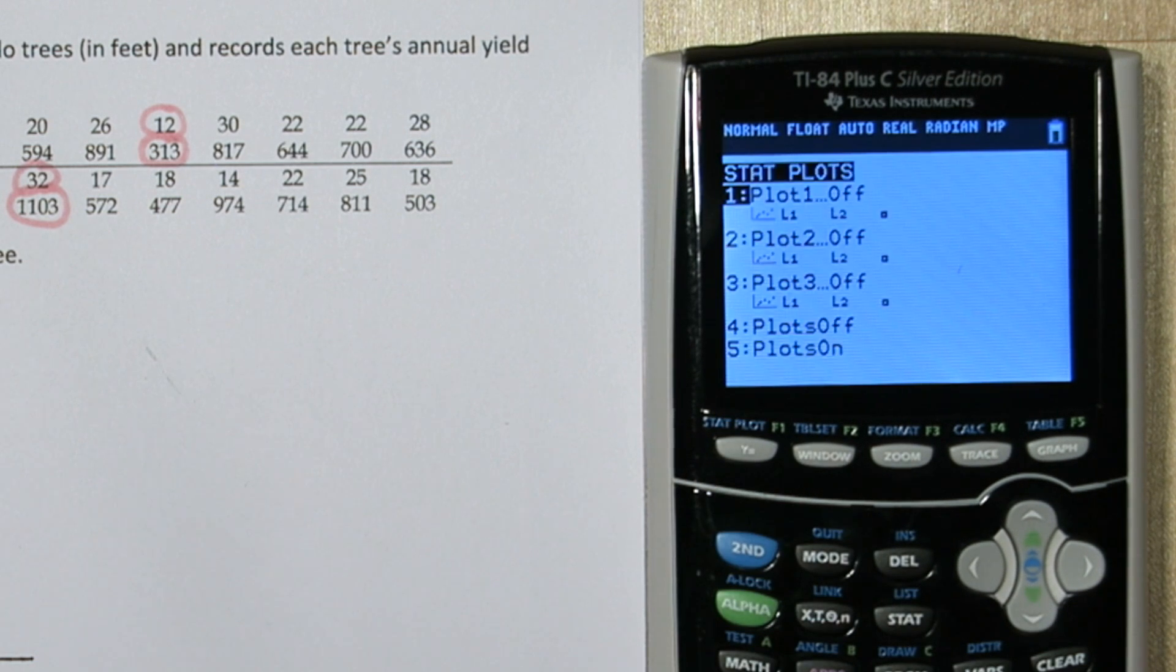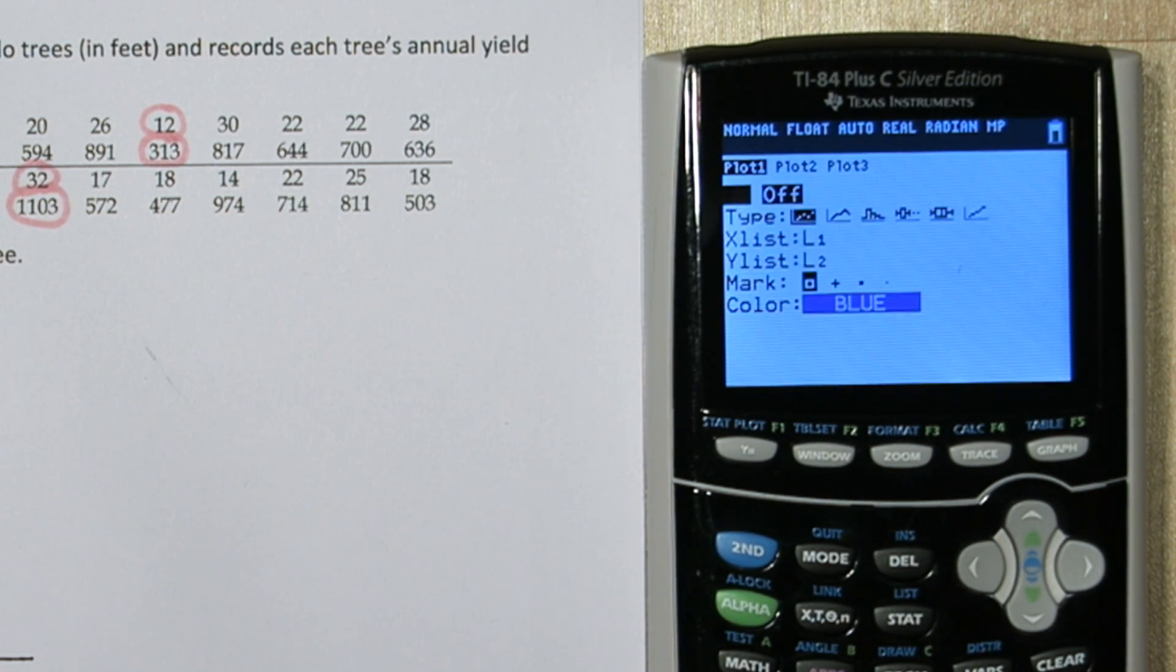Press 2nd, y equals. This is our STAT plot menu. And we're going to press ENTER on plot 1, we're going to press ENTER again to turn it on, and the first option here is a scatter plot.